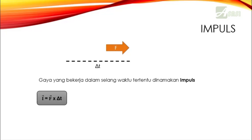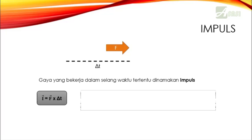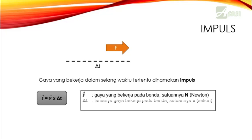Kalau ditulis dalam bentuk matematis, maka I sama dengan F dikali delta t (I = F·Δt) — jadi gaya yang bekerja sepanjang selang waktu tertentu. Di mana F itu gaya yang bekerja pada benda, satuannya Newton; sedangkan delta t itu lama gaya bekerja pada benda ketika benda tersebut bersentuhan, satuannya sekon. I itu impuls, satuannya Newton sekon atau kilogram meter per sekon.